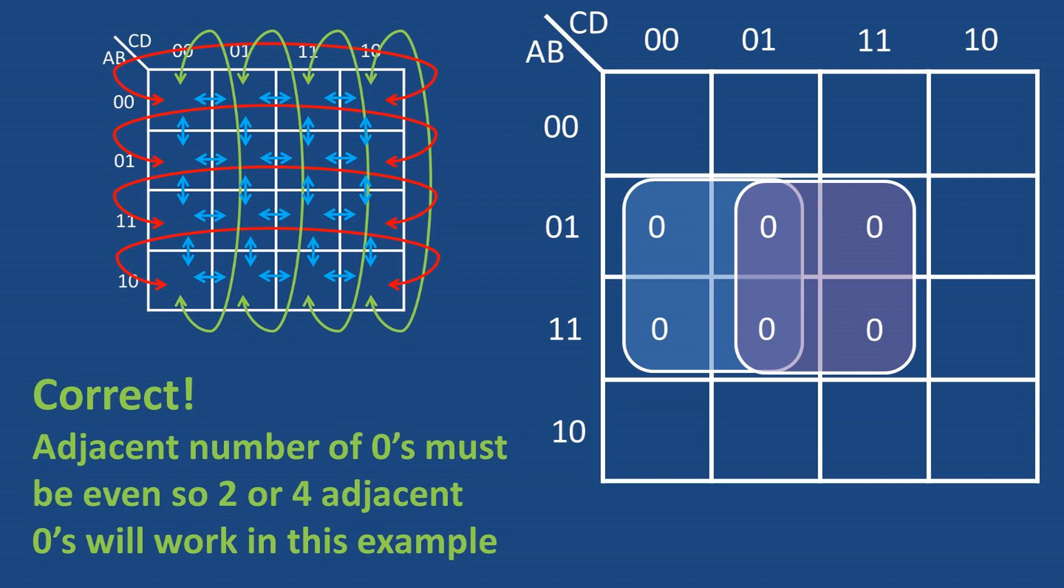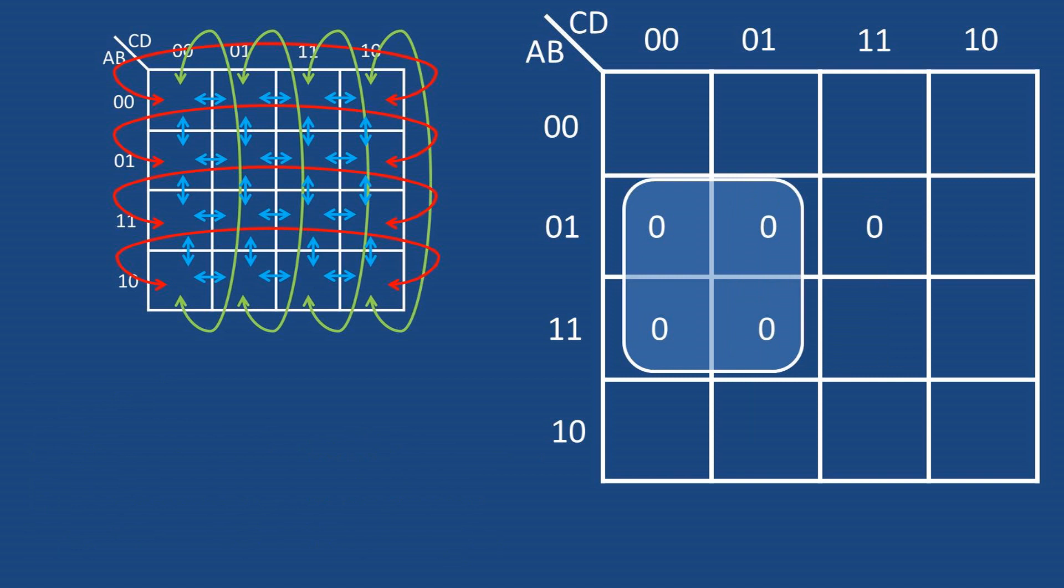Now let's say we have one zero all by itself next to a box. How do we group this? We group it with the adjacent cell like so.